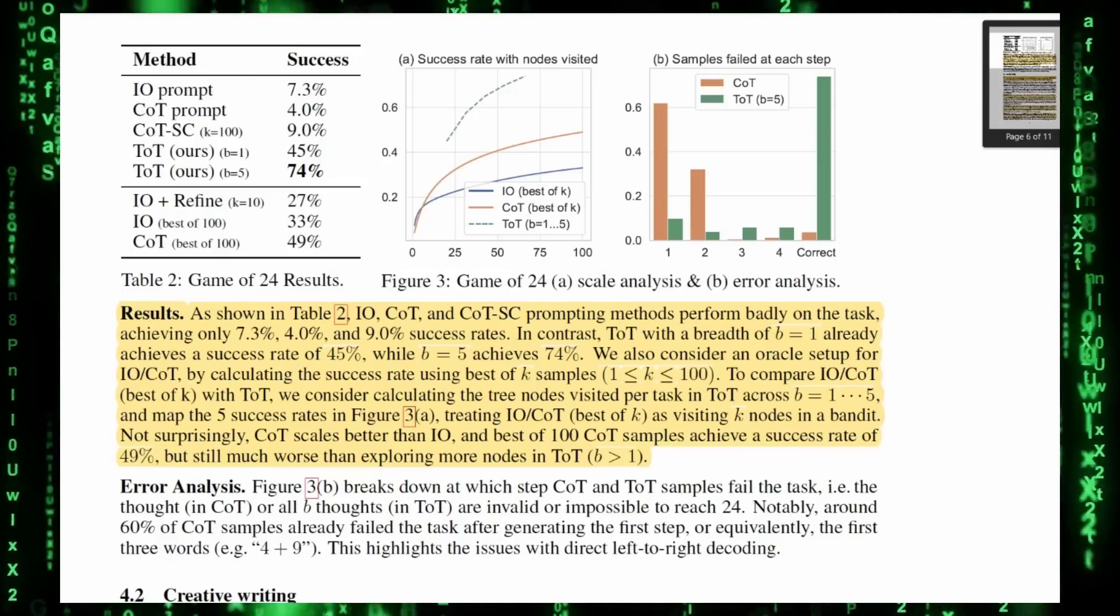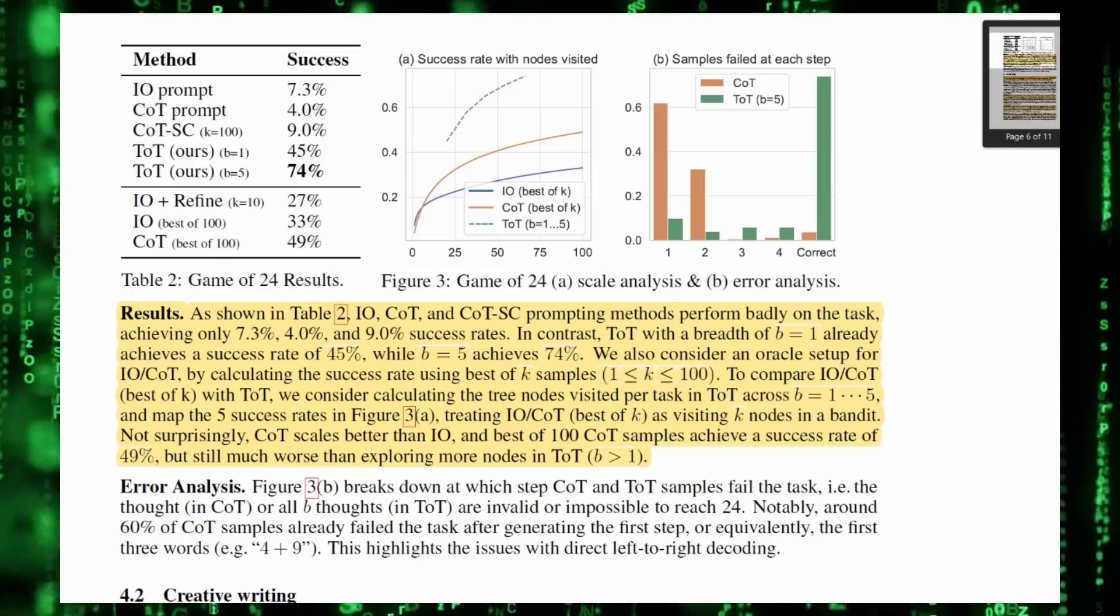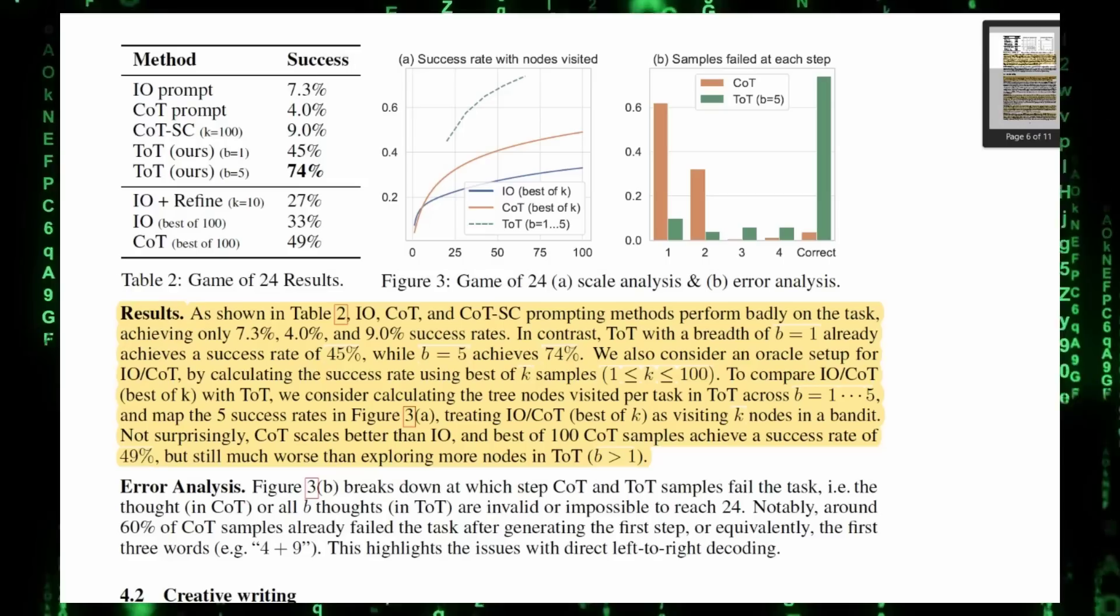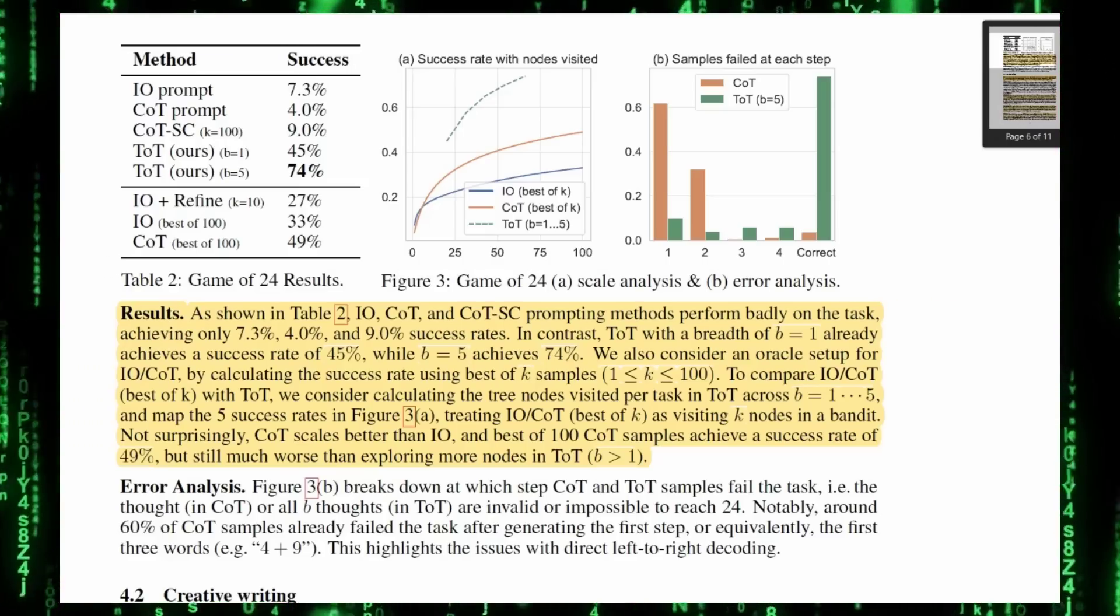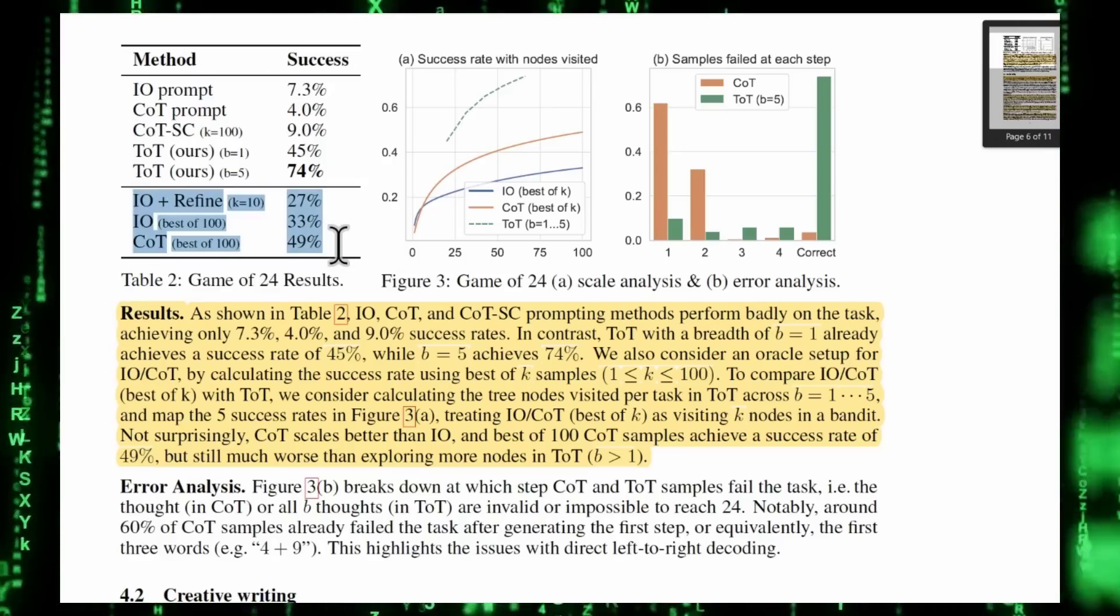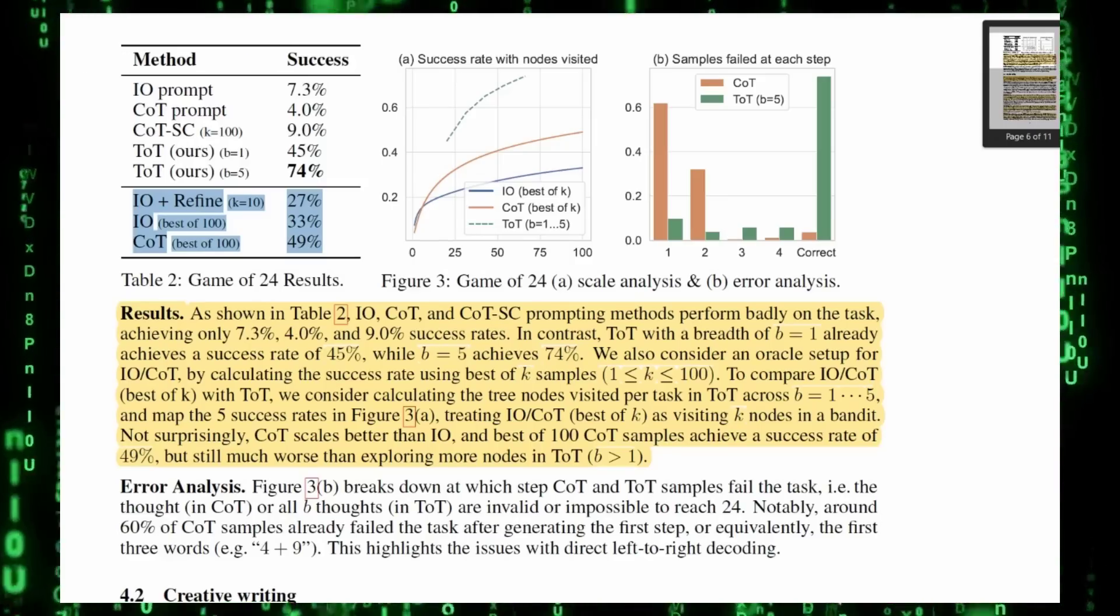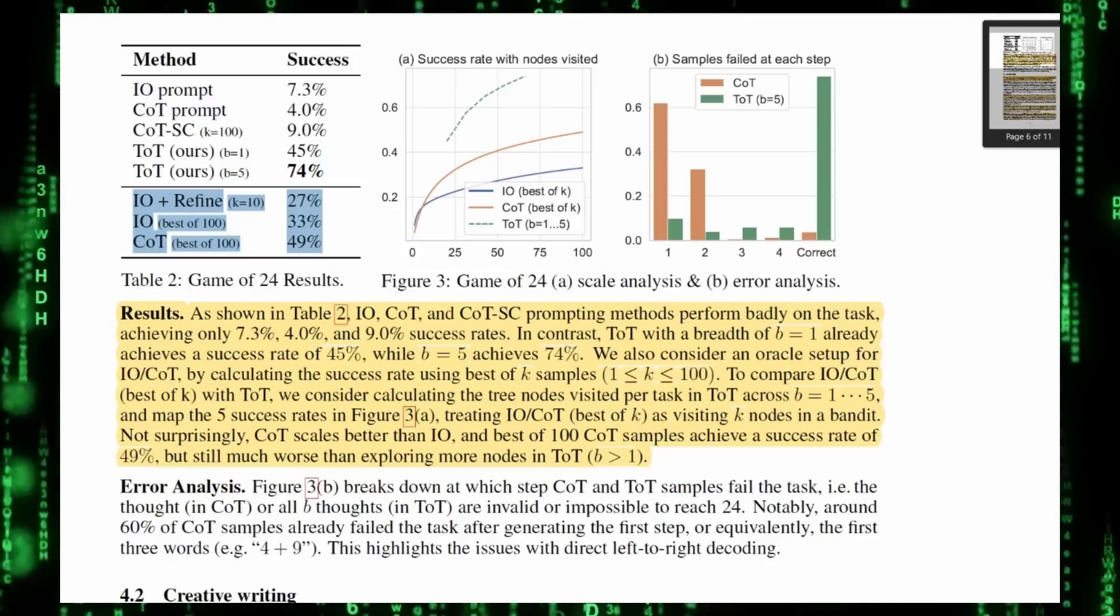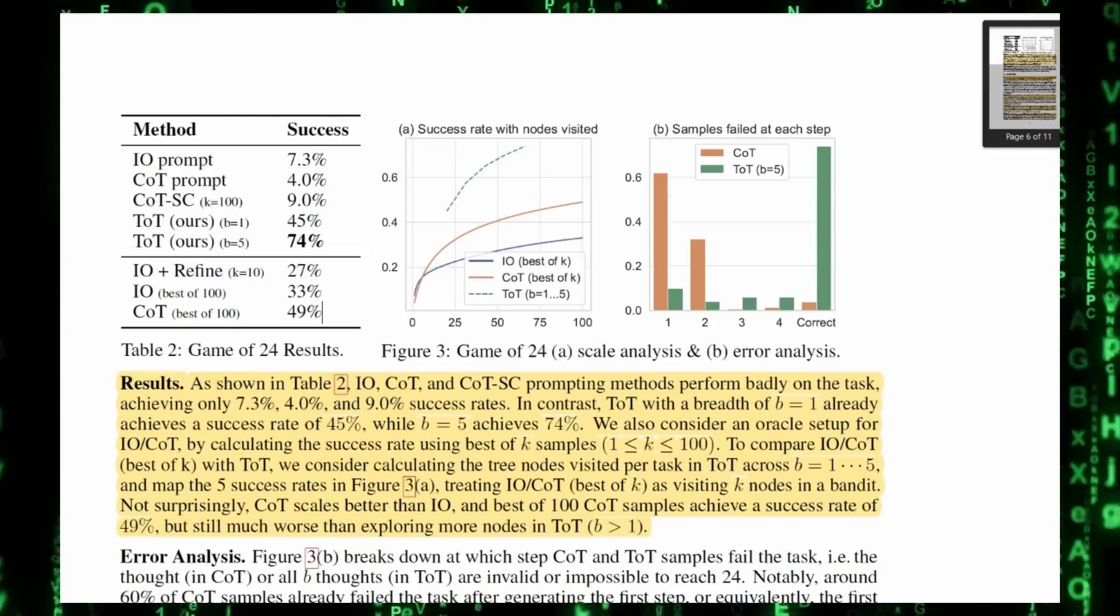Then we have our tree of thoughts with a breadth of 1, and the results are 45%. That's a massive leap. And then they run again with b equals 5, meaning there's more starting points, 5 starting points that it thinks through, and the results go up to 74%. So it's bigger by far than any of the other methods used, even these three other methods here where they rerun the results and pick the best of 100. Tree of thought absolutely crushes everything else. Notice it's almost 10x the results of just asking GPT-4 to solve the problem in one prompt. This absolutely crushes Game of 24.